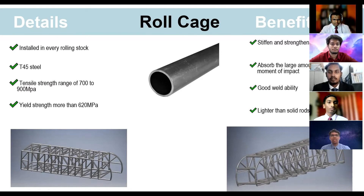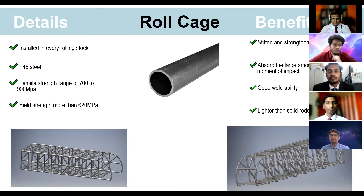We have designed a custom roll cage for the rolling stocks and are suggesting that every rolling stock should be installed and equipped with one. The material we are suggesting is T45 steel because of its tensile strength ranging from 700 to 900 MPa. The benefits of using T45 steel are that it stiffens and strengthens the chassis and absorbs a large amount of force during a collision or a rollover. It also has good weldability, which makes the fabrication process easy, and it is lighter than solid rods.